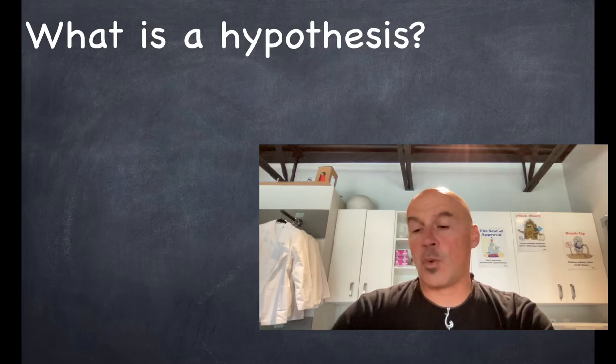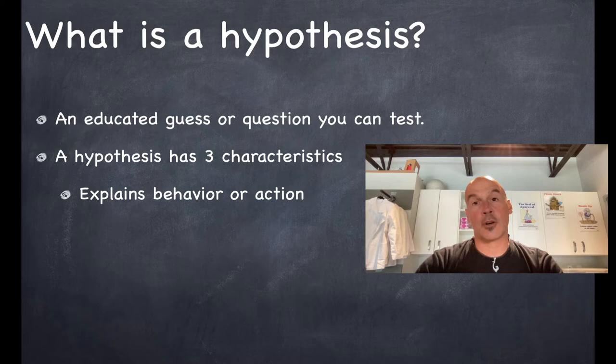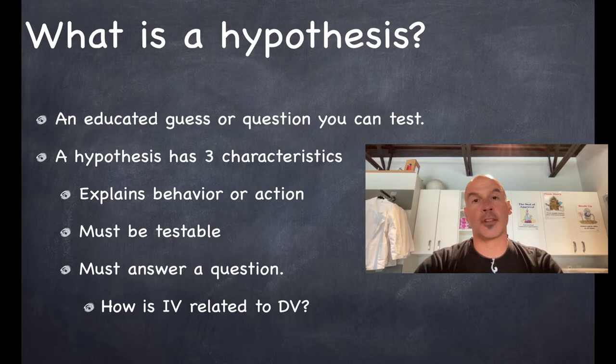All right, so what exactly is a hypothesis? A hypothesis is an educated guess or it's a question that you can test. It has three main characteristics. The first is it explains behavior or action. It has to be testable. It's got to answer a question. In this case, it is the relationship between the independent and dependent variable, the IV and the DV.